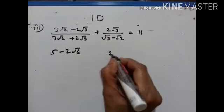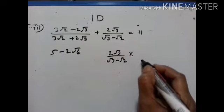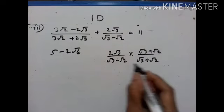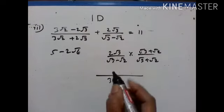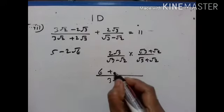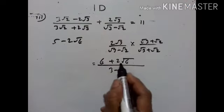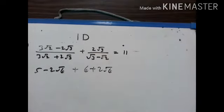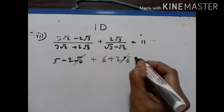Now take 2√3 upon (√3 minus √2). After rationalization, the numerator gives terms that simplify to 6 plus 2√6. Adding both results: (5 minus 2√6) plus (6 plus 2√6) — the 2√6 terms cancel — giving 5 plus 6 equals 11.